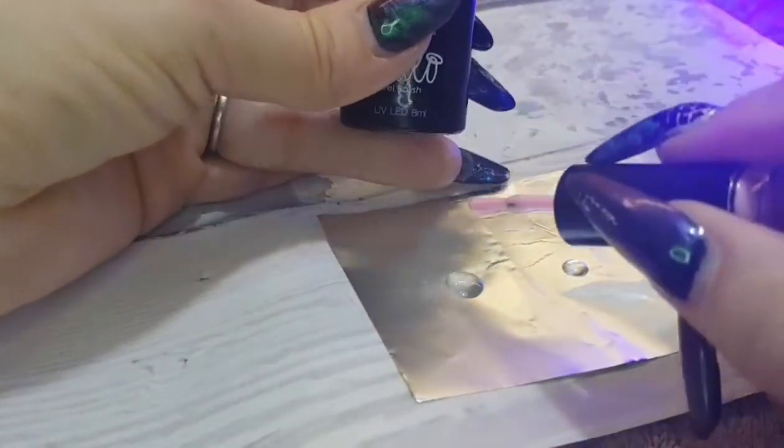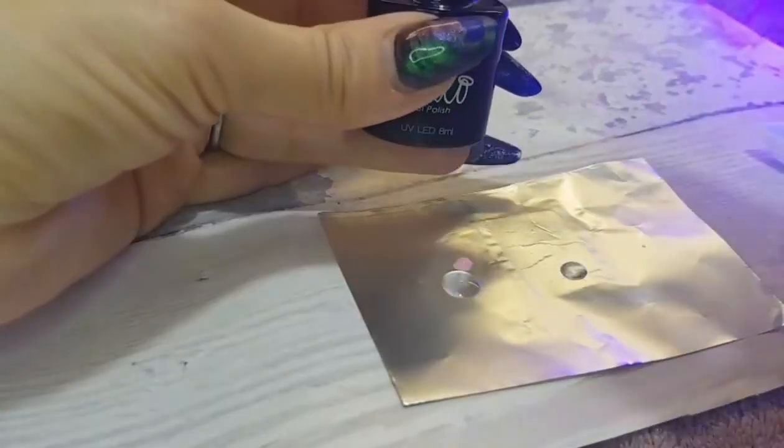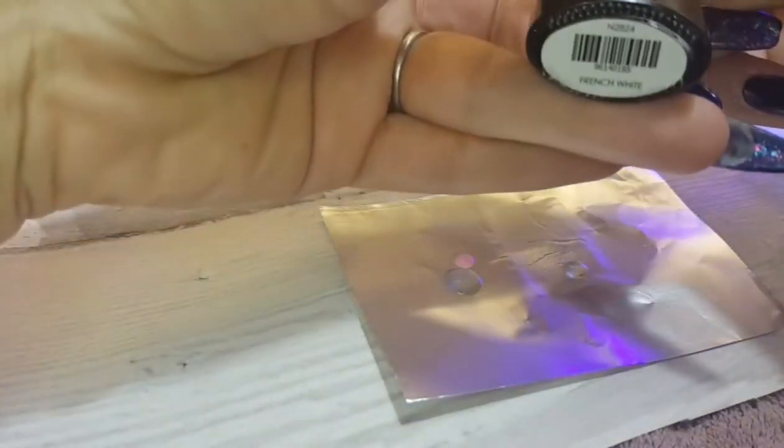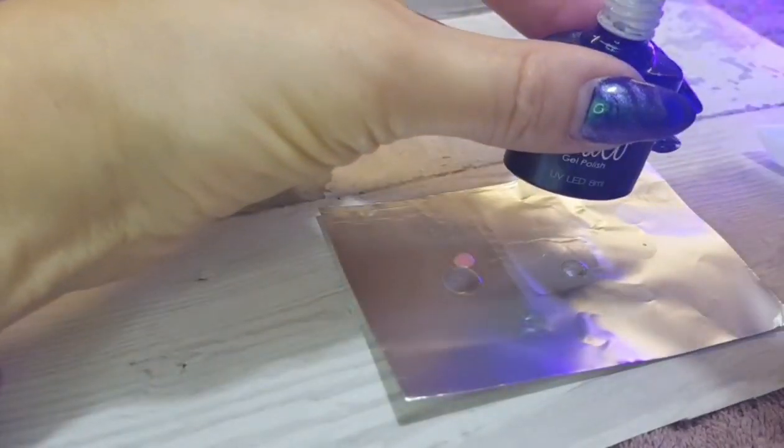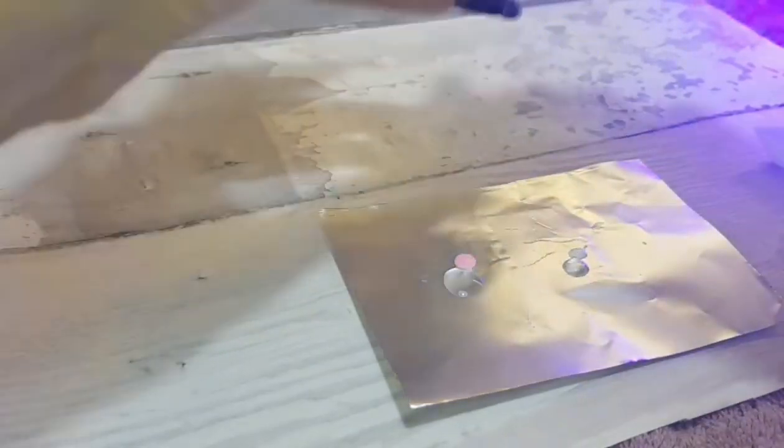And then what you want is your French Pink. And I would say about a ratio of 80-20, so 80 base coat, 20 color.